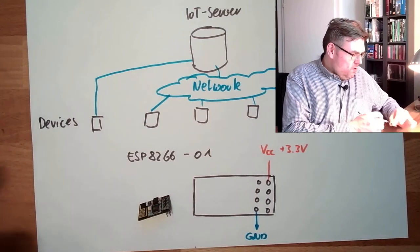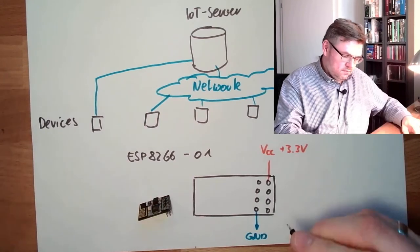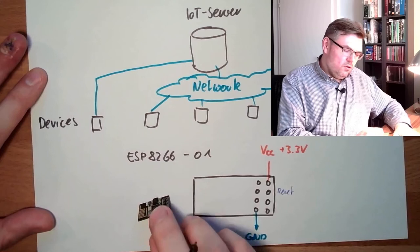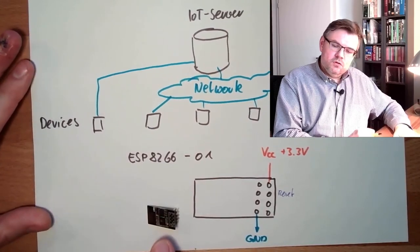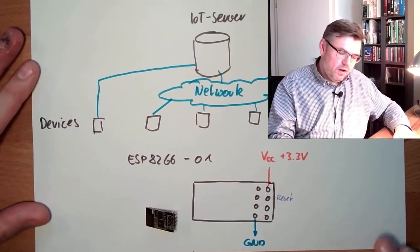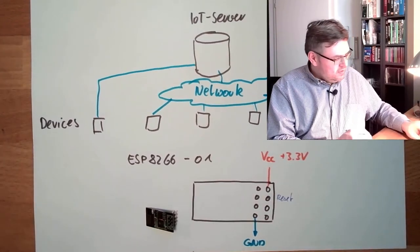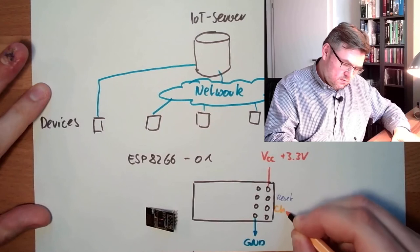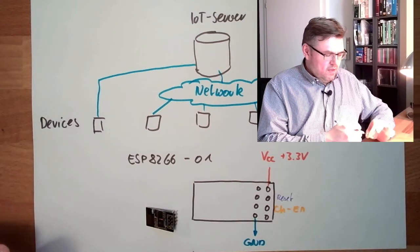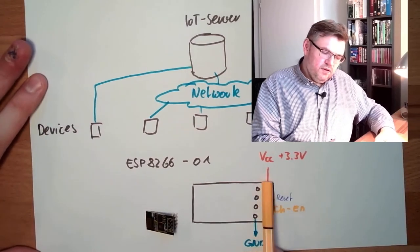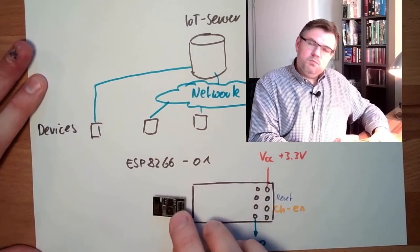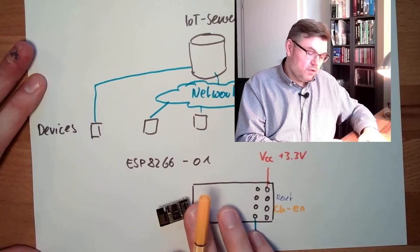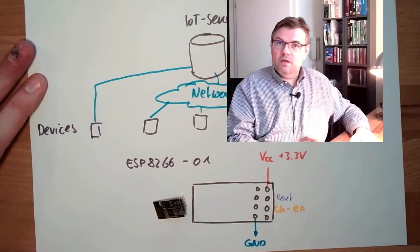Then here we do have a reset line. Whenever we connect reset to the ground, this will stop program execution and start it whenever I open reset. That's basically the reset button on my Arduino. And this here is the chip enable. If I'm connecting this to plus 3.3 volts, so to VCC, the chip will start executing its program. If it's not enabled, the chip will remain not executing. Then I can do the power supply, not enable it, that's it.